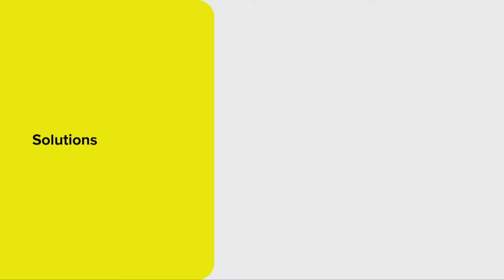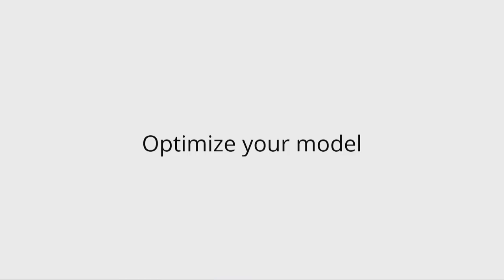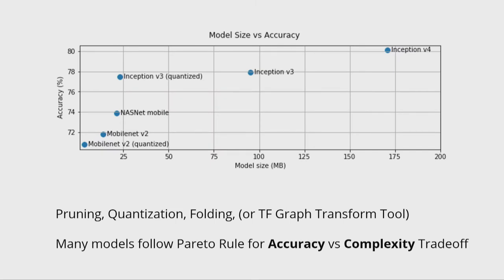So where are some solutions? First, optimize your model, but really understand the trade-off between accuracy and complexity. Research papers benchmark accuracy, and you're supposed to just pick the highest number. But in production at-scale deployment, you want the Pareto curve trade-off — the most bang for your buck. The quantized version of Inception V3 gives a slight hit in accuracy, maybe half a percent, but it's about a fourth the size. Pruning, quantization, and using the TF Graph Transform tool are really useful here. Evaluating this accuracy-complexity trade-off is very necessary before doing anything else.